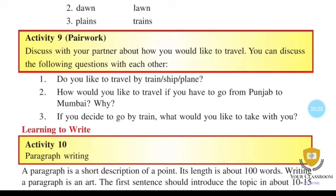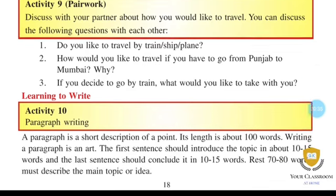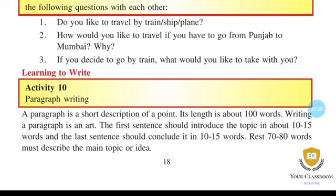If you decide to go by train, what would you like to take with you? Next is Paragraph Writing. A paragraph is a short description of a point, about 100 words. The first sentence should introduce the topic in 10 to 15 words, the last sentence should conclude it, and the rest should describe the main topic.